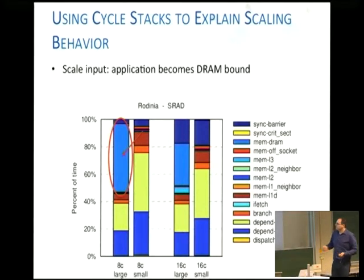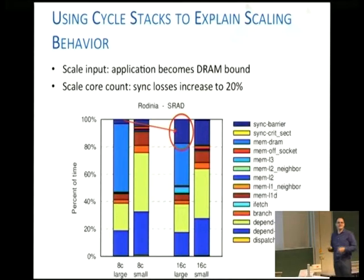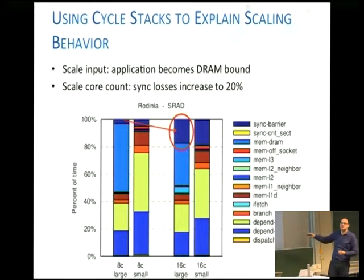There are other interesting things you can look at — for example, you can compare different input sets, and you can compare scaling from 8 cores to 16 cores to see how much time you're spending in synchronization versus actually doing computation.